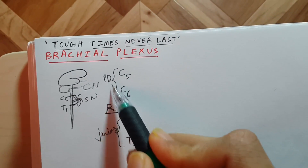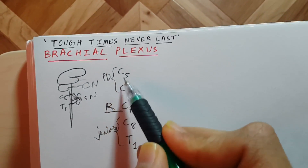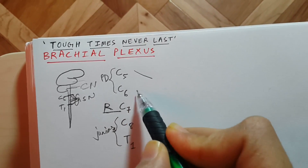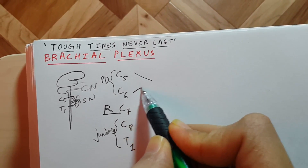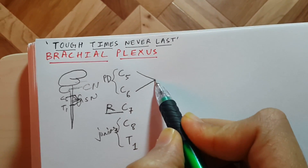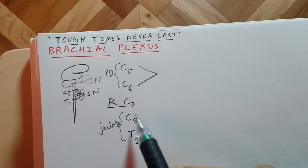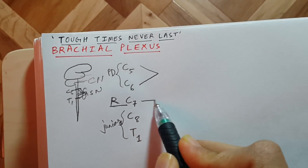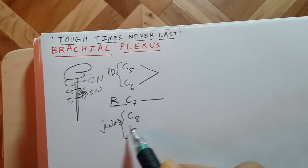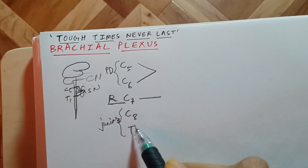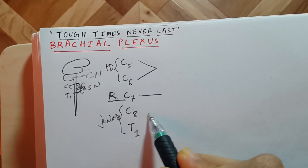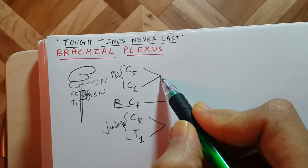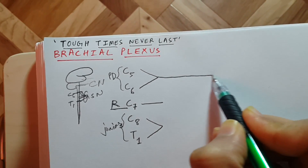C5 and C6 are program directors and they are both friends, so they both go together on a journey. The resident is alone so he moves alone, and the juniors — C8 and T1 — are also friends so they go together as well.